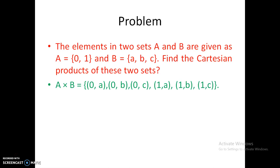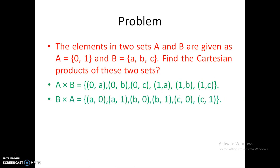Now let us find B × A. Here everything is reversed, and B × A is not equal to A × B. The first element must come from B and the second from A: (a,0), (a,1), (b,0), (b,1), (c,0), (c,1). If two sets are the same, say both are A, then A × A is written as A² — this is called the Cartesian square of A.